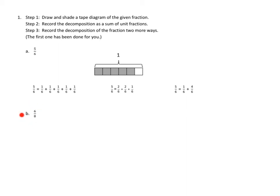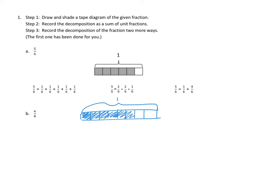Part B says we are going to do the same thing for 6 eighths. First we're going to draw a tape diagram of eighths. We know the whole diagram is 1, and we need to divide it into eighths — divide it by half, and then by quarters. That's 1, 2, 3, 4, 5, 6, 7, 8. And how many of those eighths do we need to shade in? We need to shade in 6 of the eighths. There we go, awesome.